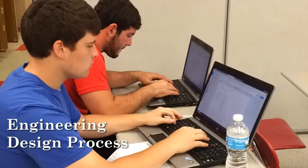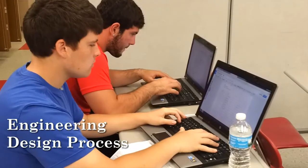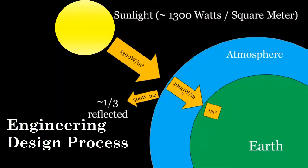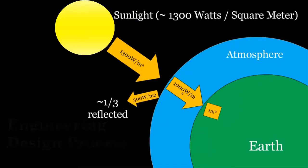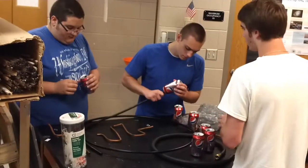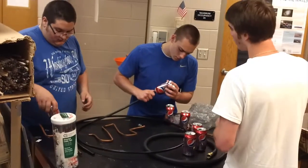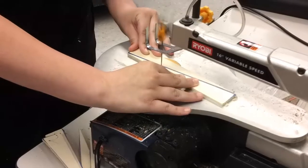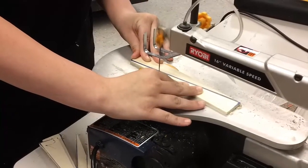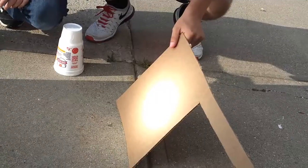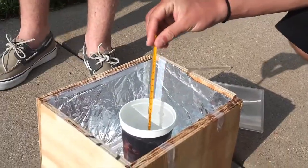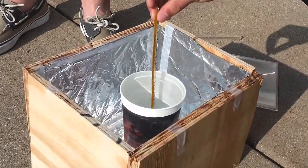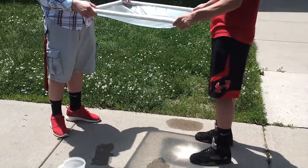Students participate in the engineering design process first by researching ways to collect, capture, and contain the incoming energy from the sun to heat water. Design groups then develop their own unique solar water heater. The device is built and tested, and based on the initial performance, the device can be rebuilt and retested until it meets the student's expectations.